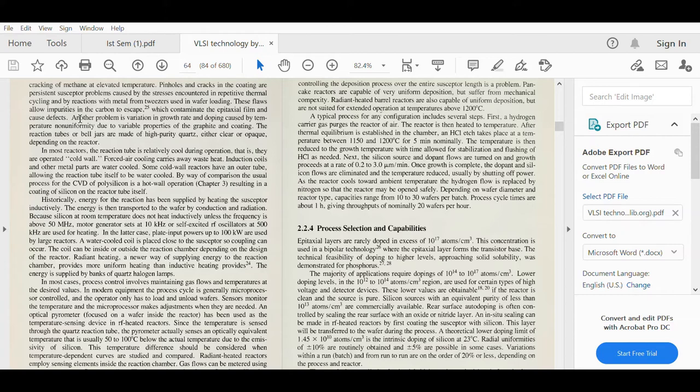Another problem is variation in growth rate and doping caused by temperature non-uniformity due to variable properties of the graphite and coating. The reaction tubes or bell jars are made of high purity quartz, either clear or opaque, depending on the reactor.